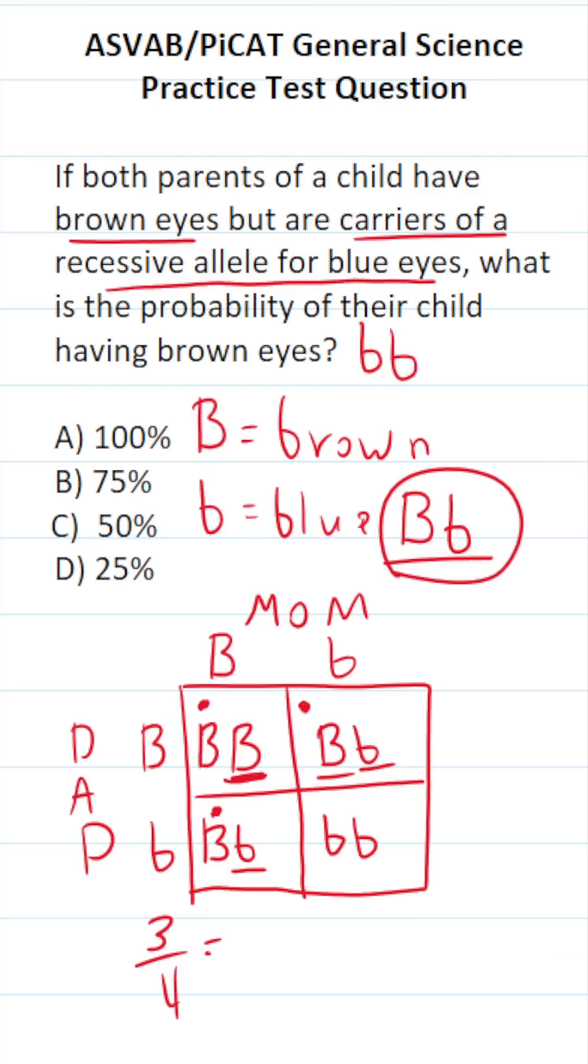So in three out of the four boxes, the offspring would have brown eyes. Three out of four is the same thing as 75%. So to answer this one, the probability of their child having brown eyes is B, 75%.